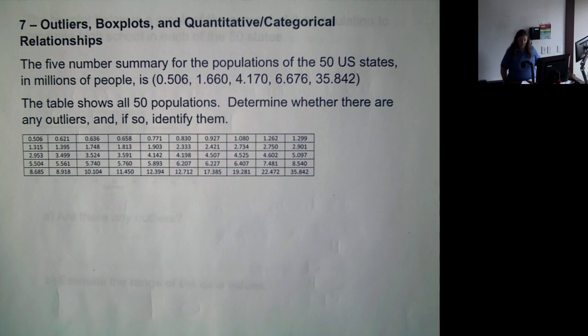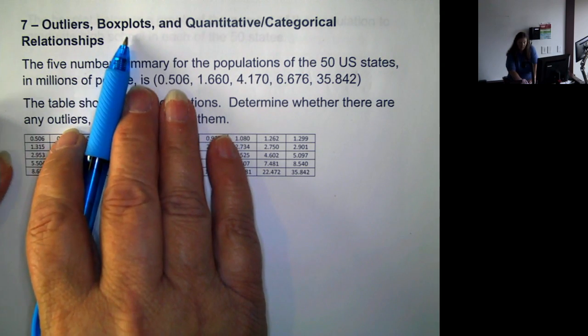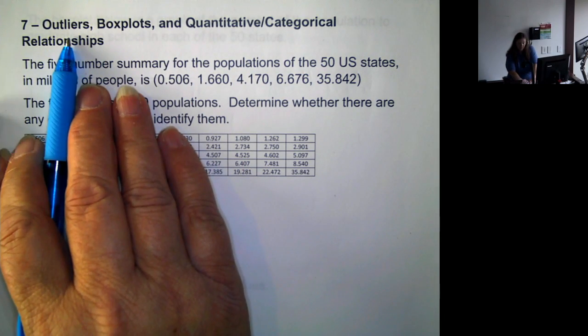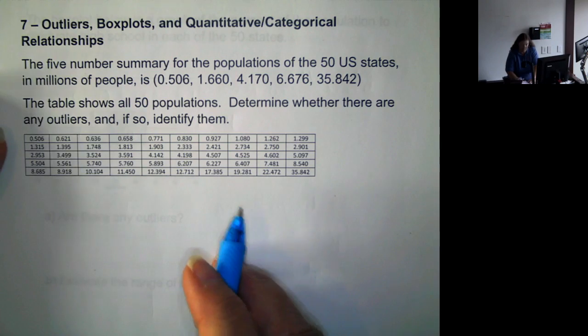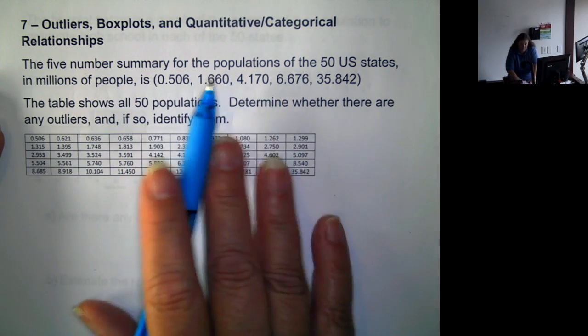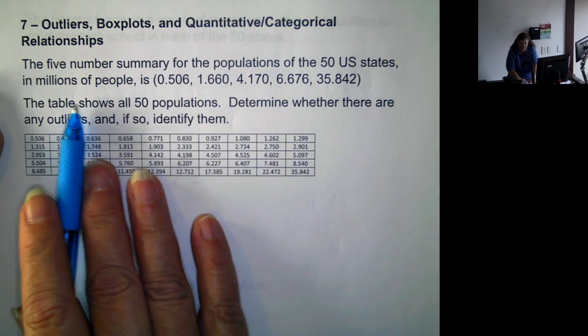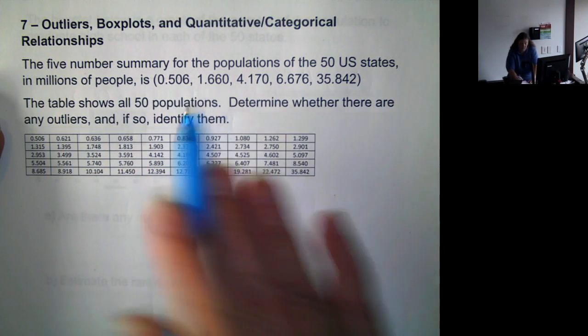Okay, we're going to move on. We've talked about the five-number summary. Now, one of the uses for the five-number summary is to draw a box plot and also help identify outliers. And we're also going to talk a little bit about quantitative and categorical relationships. The five-number summary for the population of the 50 U.S. states in millions of people is already given to us.